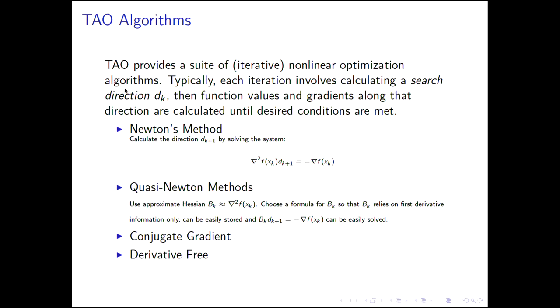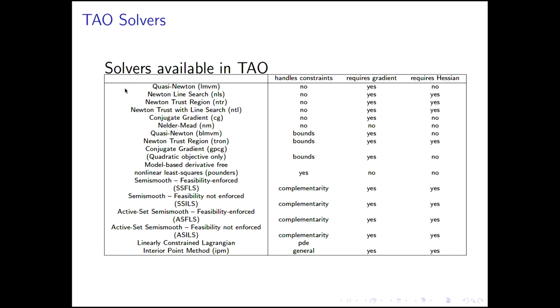TAU also has conjugate gradient methods and even derivative-free algorithms. If you have a simulation that takes 10 hours to run just to get your function evaluation, it's not realistic to think about getting gradient or derivative information, because that would require much longer runs. So there are recently developed algorithms in TAU that can do quite well for large problems in a derivative-free manner. Here's a catalog of what's available in TAU — you can look at it later and see if there are algorithms for your needs.